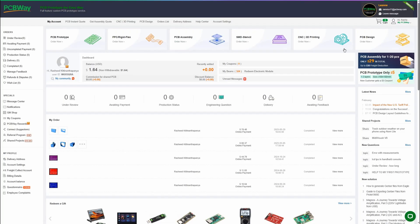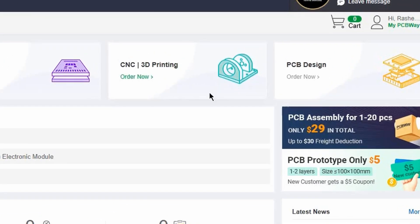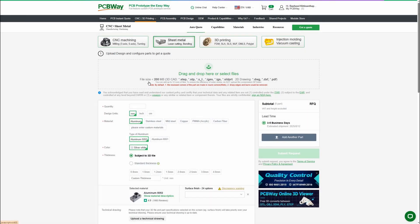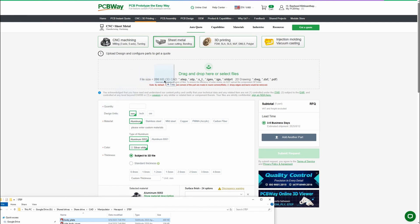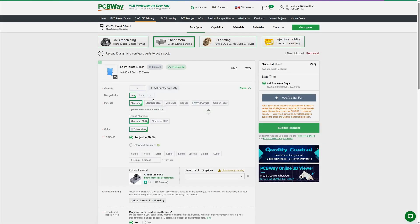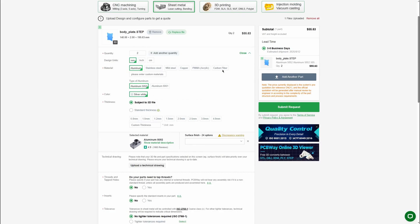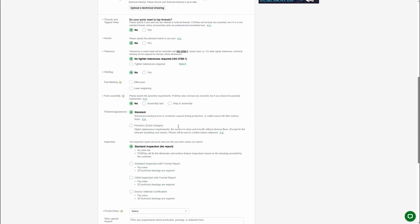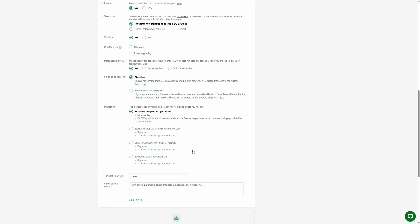Then I go to pcbway.com and click on CNC and 3D printing. This time we need to select on sheet metal. I'm very surprised that PCBWay also has a service for laser cutting for carbon fiber plate. I just need to drag and drop a step file and next select on quantity and choose the material as carbon fiber. The carbon fiber is a good material for lightweight with the high strength. The other options are fine just default.